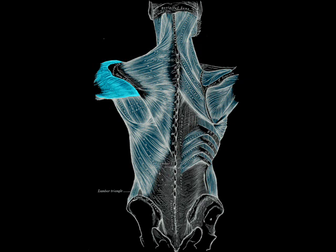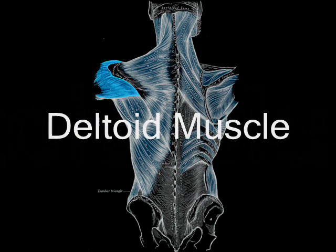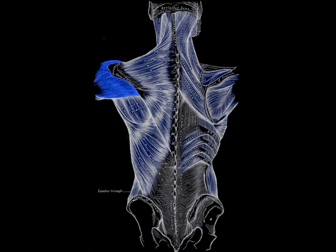Hi, I'm Dr. Dave. I'll be talking about the deltoid muscle in orthopedic surgery. In human anatomy, the deltoid muscle is the muscle forming the rounded contour of the shoulder. It was previously called the deltoideus, and the name is still used by some anatomists. It is called so because it is in the shape of the Greek letter delta — a triangle.